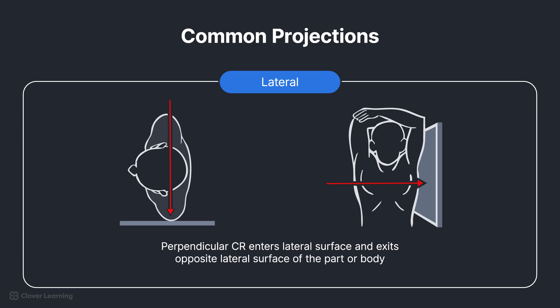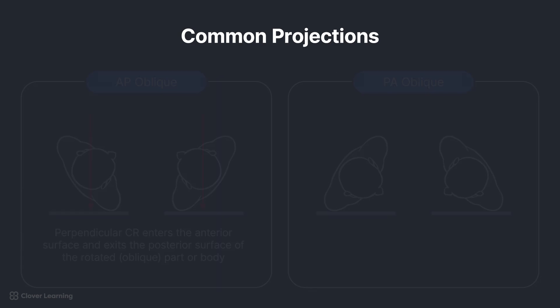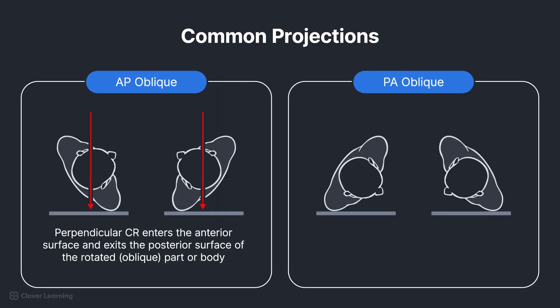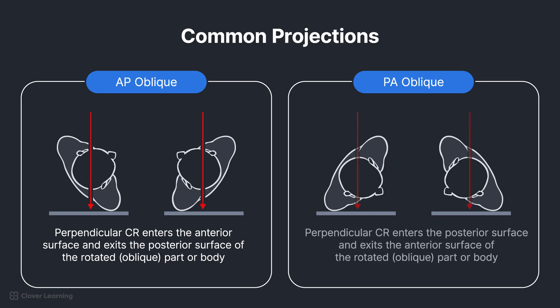Lateral: Perpendicular CR enters the lateral surface and exits the contralateral or opposite lateral surface of the part or body. AP Oblique: Perpendicular CR enters the anterior surface and exits the posterior surface of the rotated or oblique part or body. PA Oblique: Perpendicular CR enters the posterior surface and exits the anterior surface of the rotated or oblique part or body.